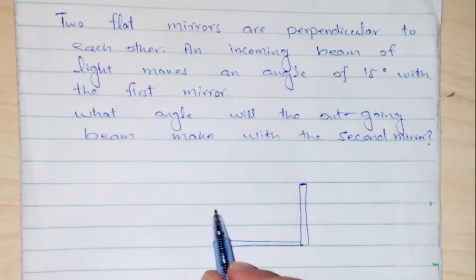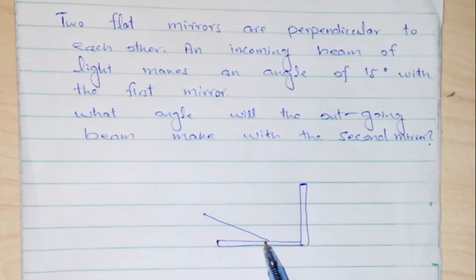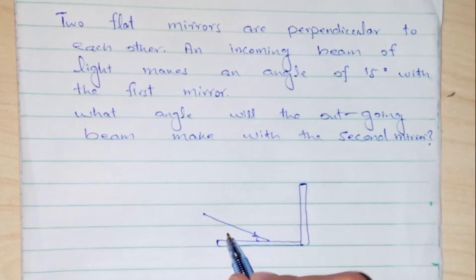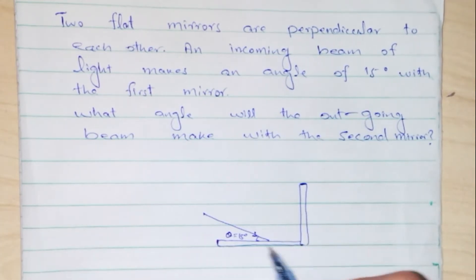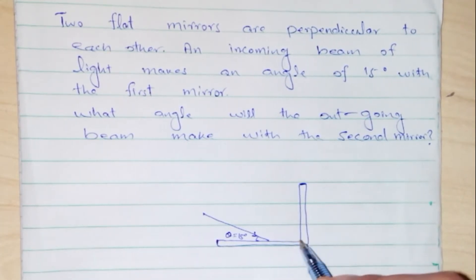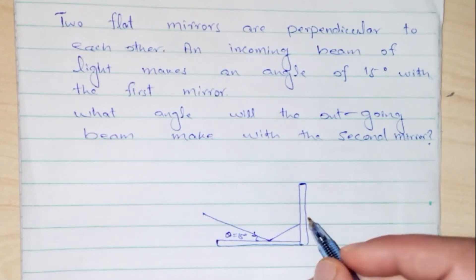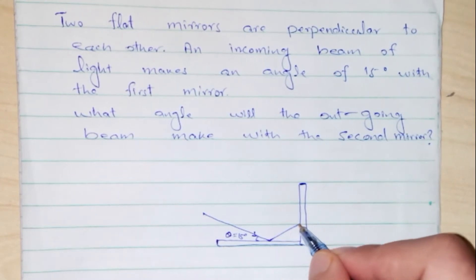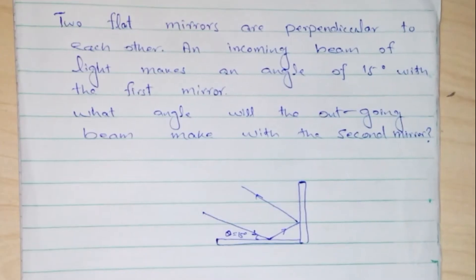An incident beam of light makes an angle of 15 degrees with the first mirror. This light is making an angle of 15 degrees with mirror one. These two mirrors are perpendicular to each other. When the light strikes this mirror it will reflect back and fall on the second mirror, then reflect back from the second mirror with a certain angle. This is the path the light will follow.